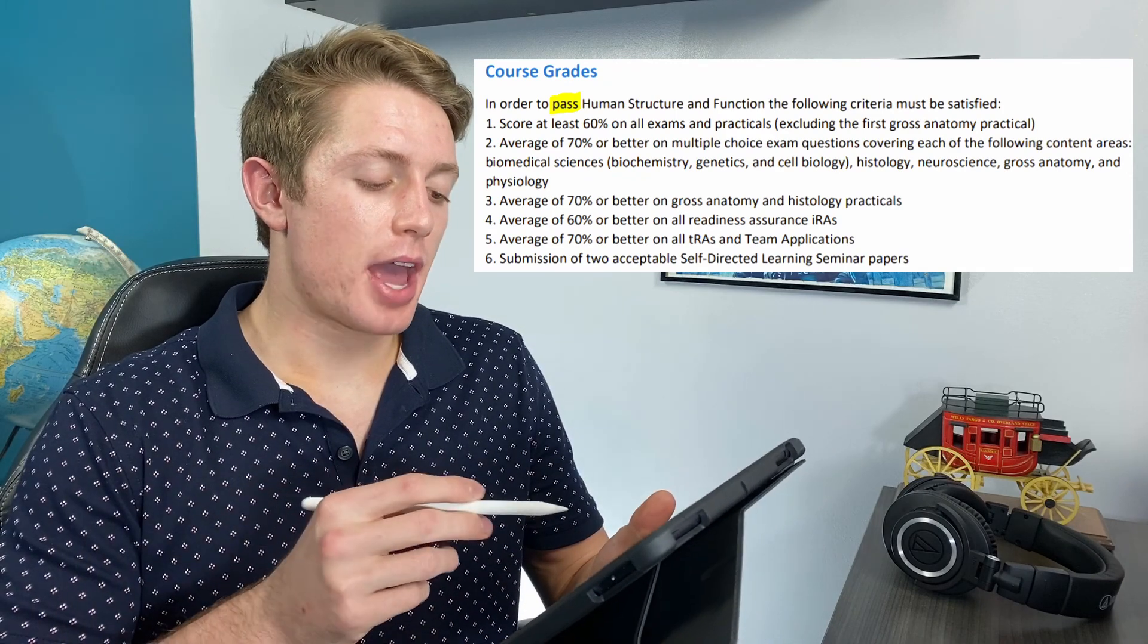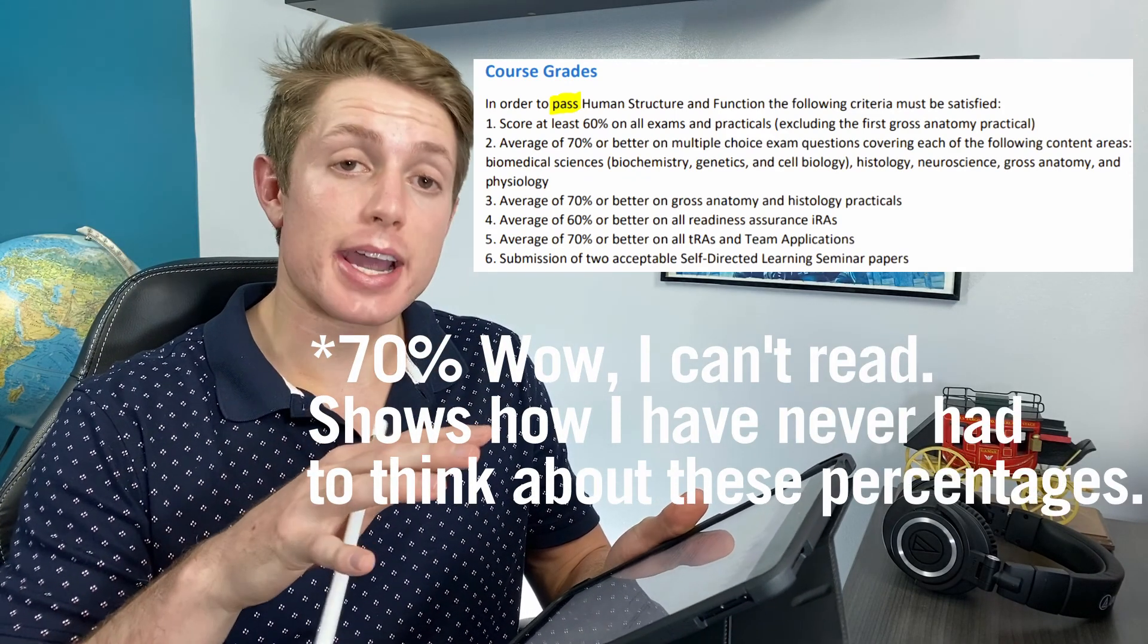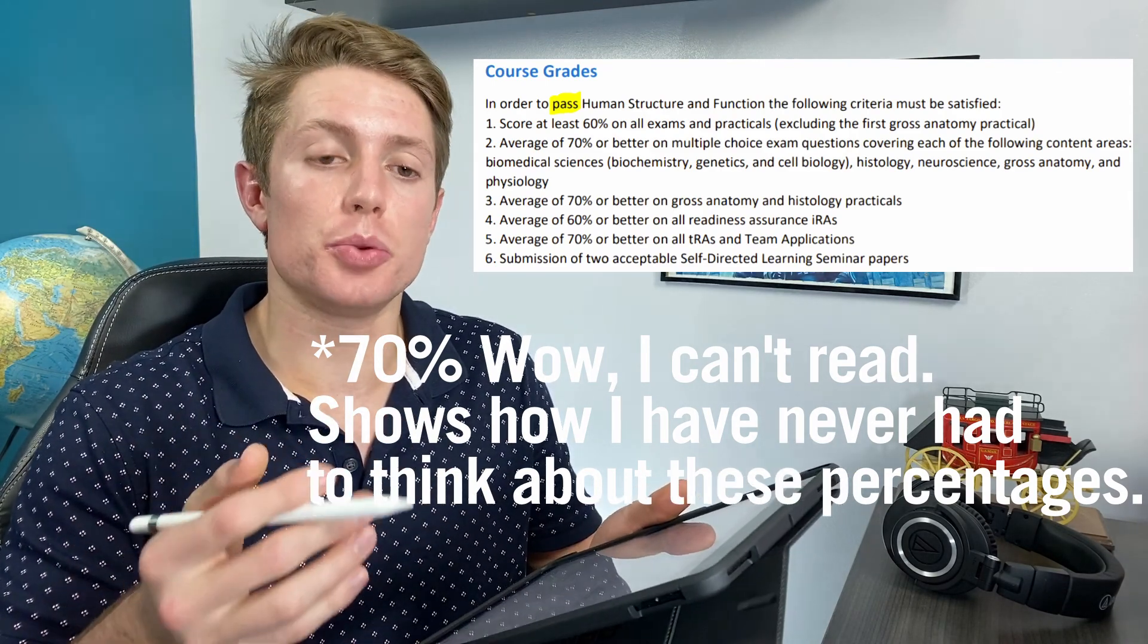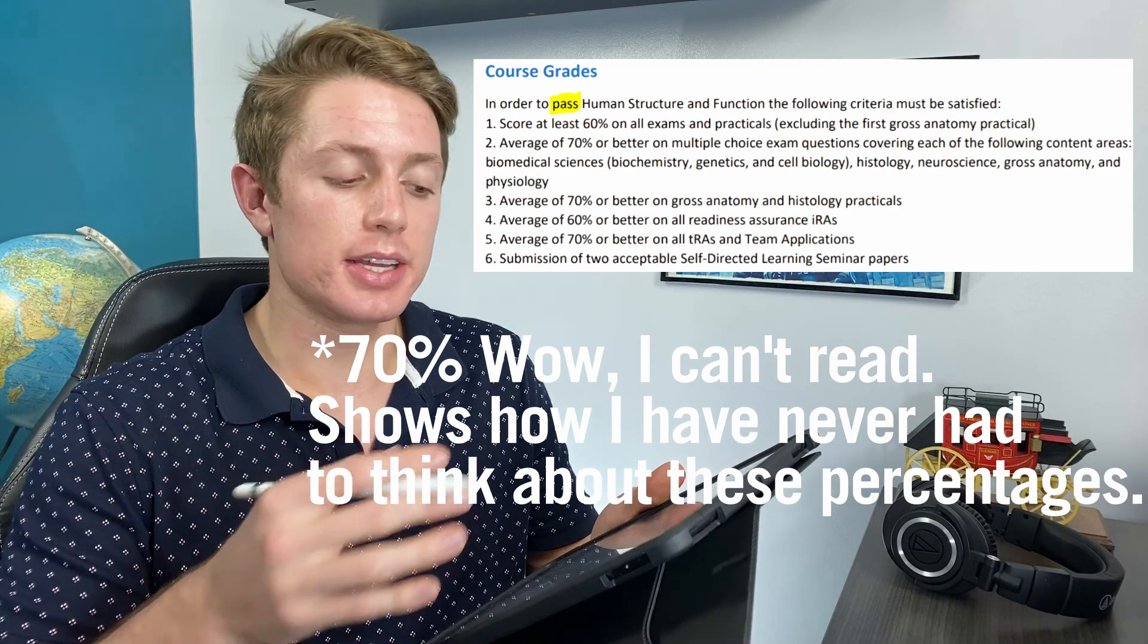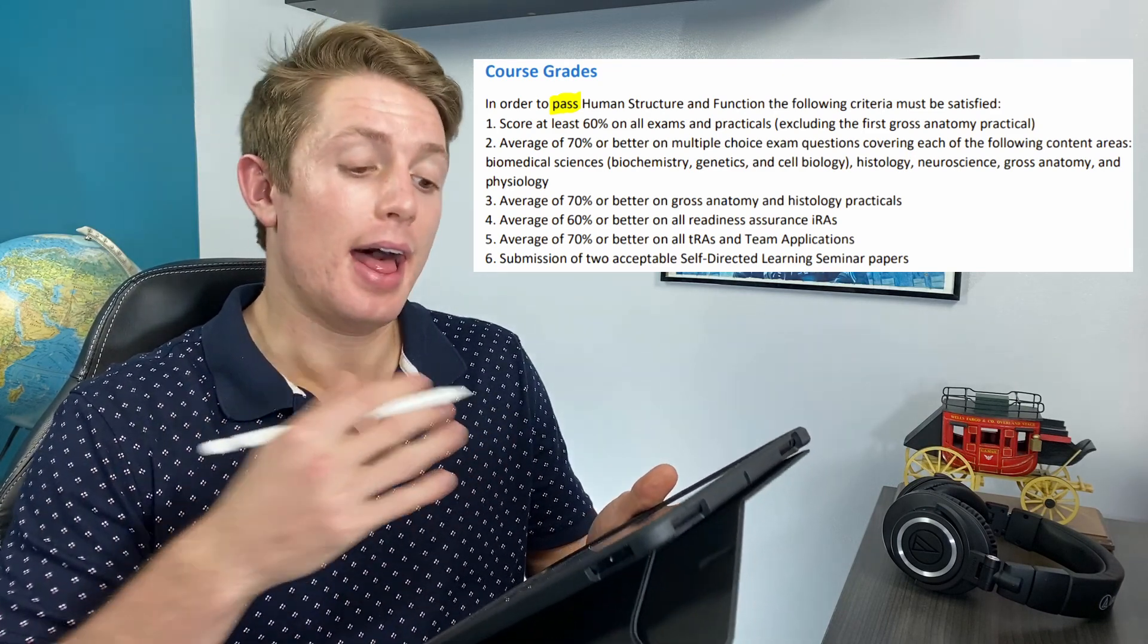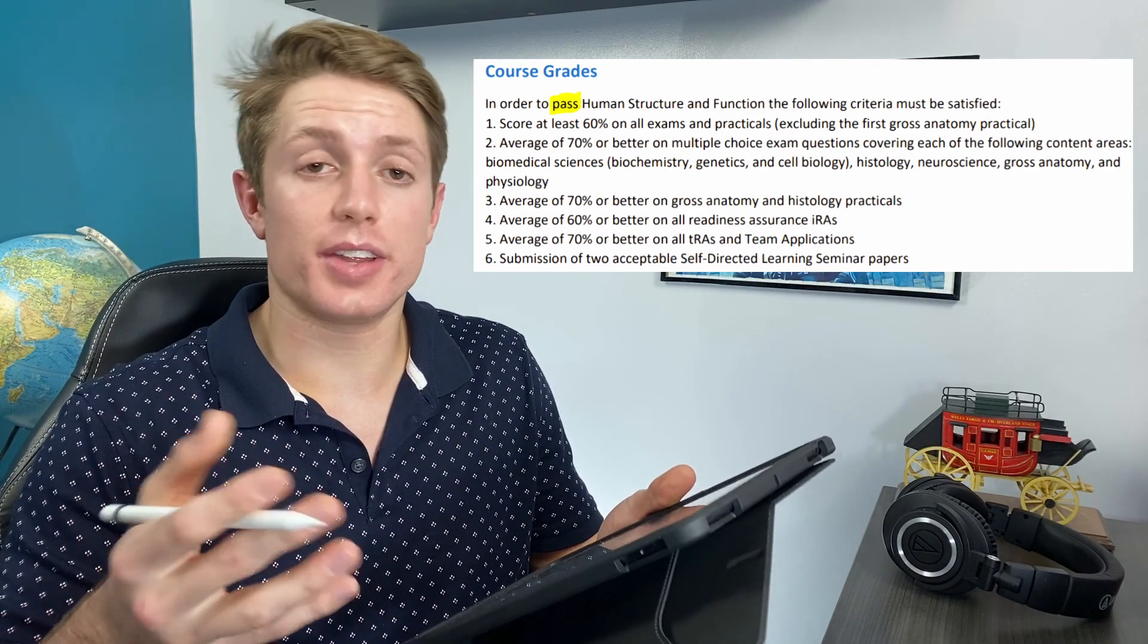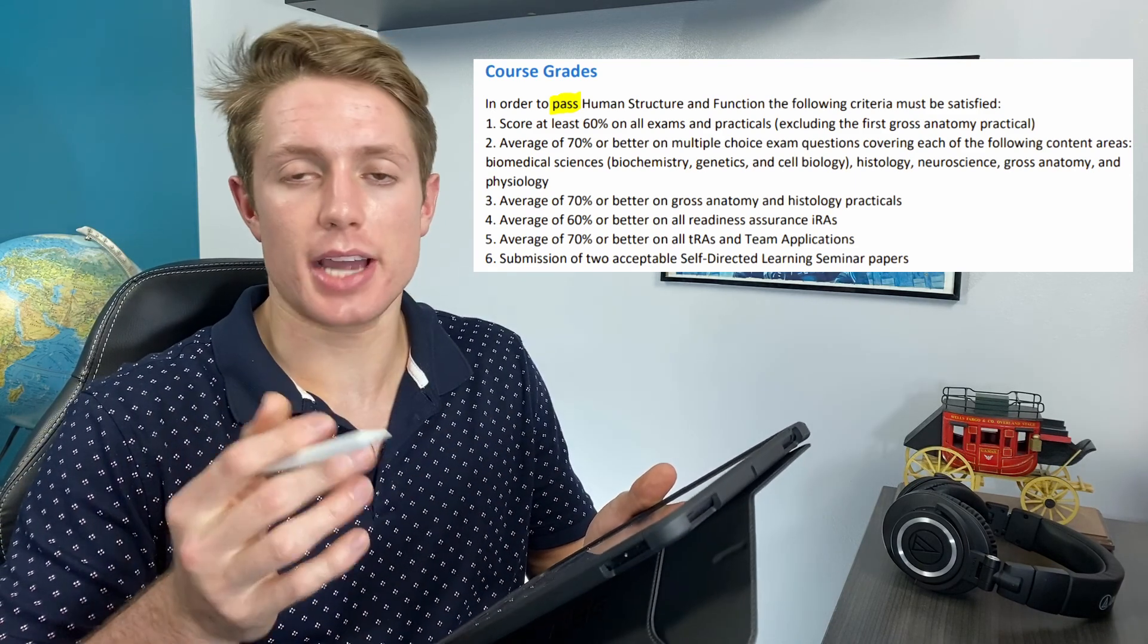So then the next criteria is averaging 70% within each of the subject sections of the multiple choice exam. This is talking about the exams that happen every two weeks. They do give you a breakdown of the different topics, and you do have to get at least a 70% overall averaging all of the exams within the different categories. So you can't just say I do not care about histology, I just refuse to learn that. You do have to learn all of the different content areas: biomedical sciences, histology, neuroscience, gross anatomy, and physiology.